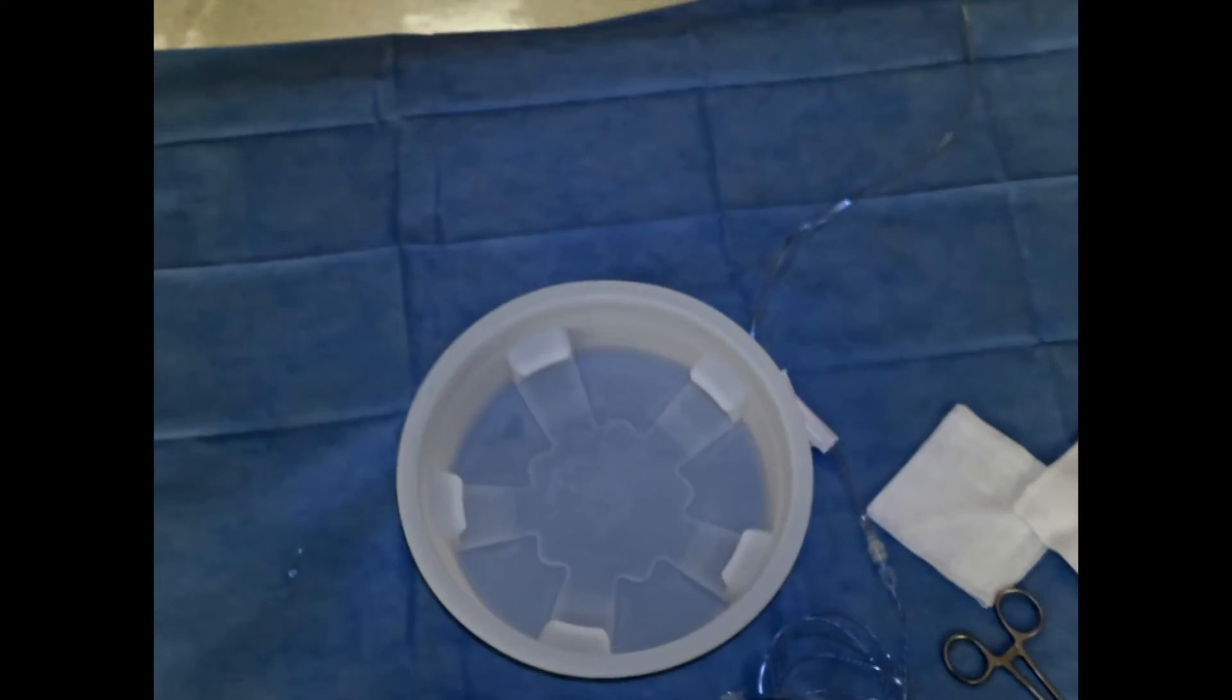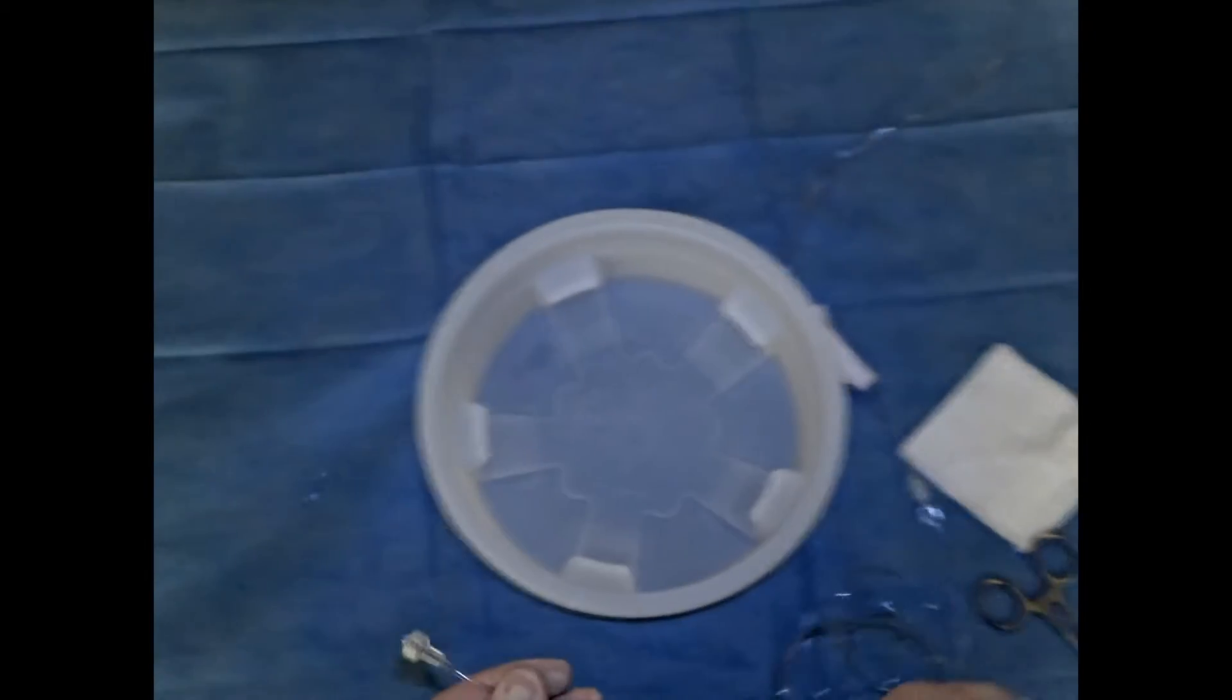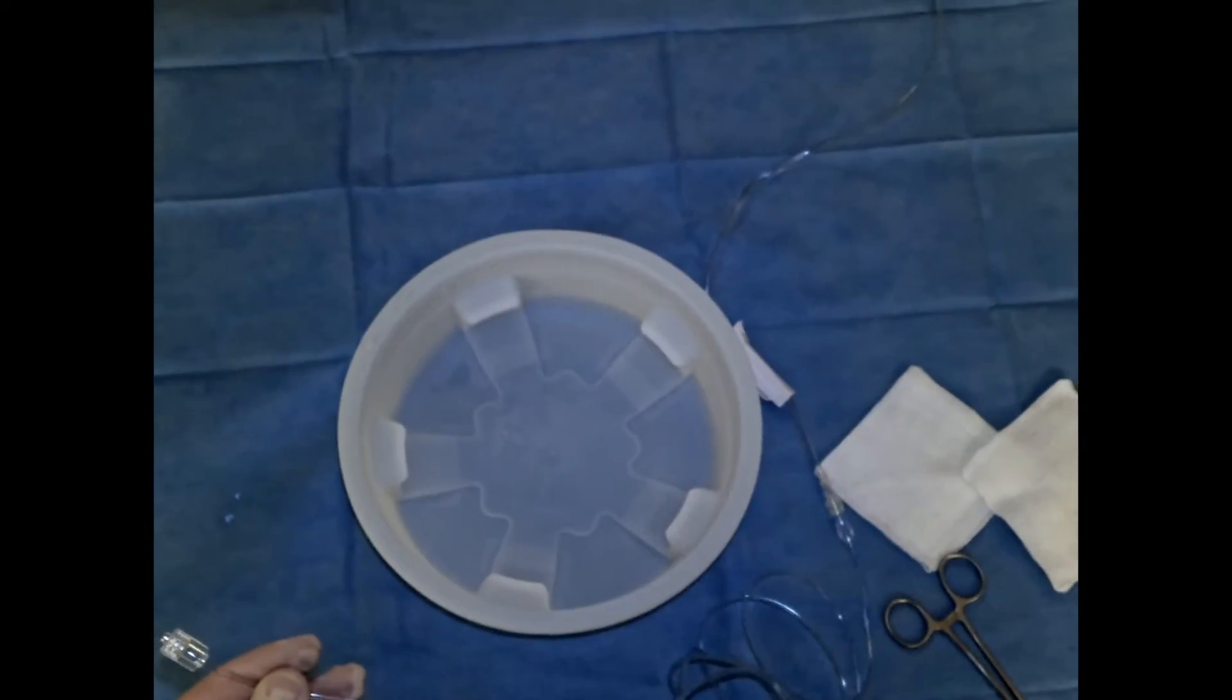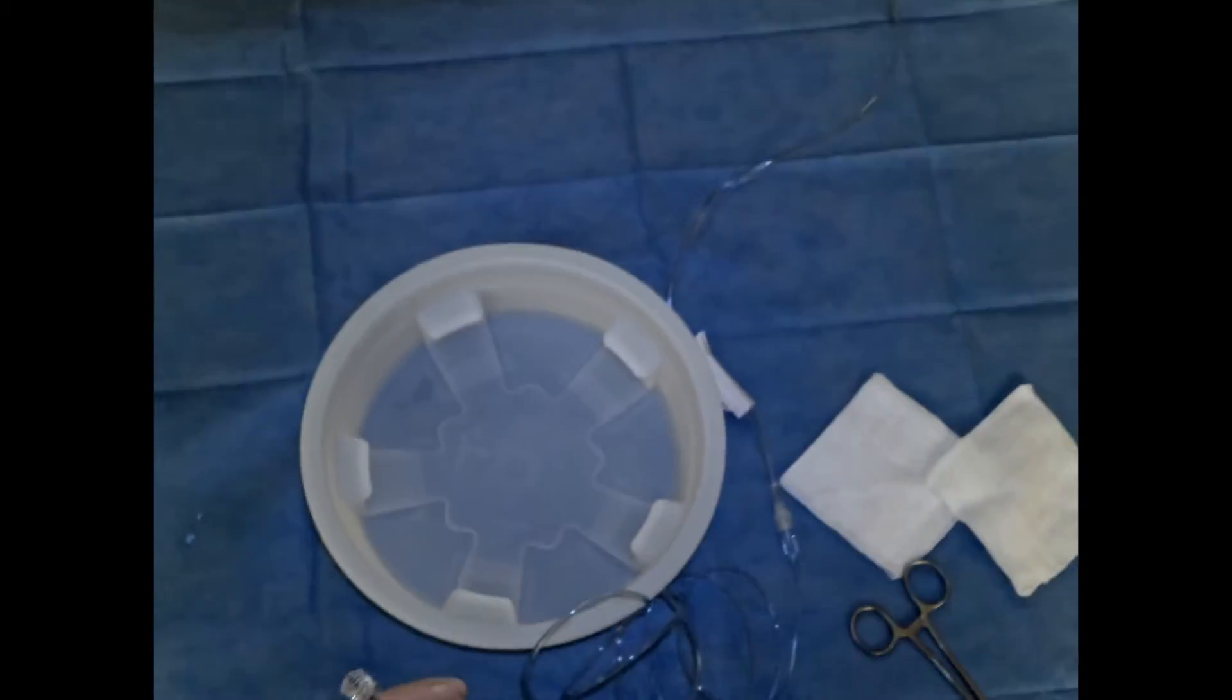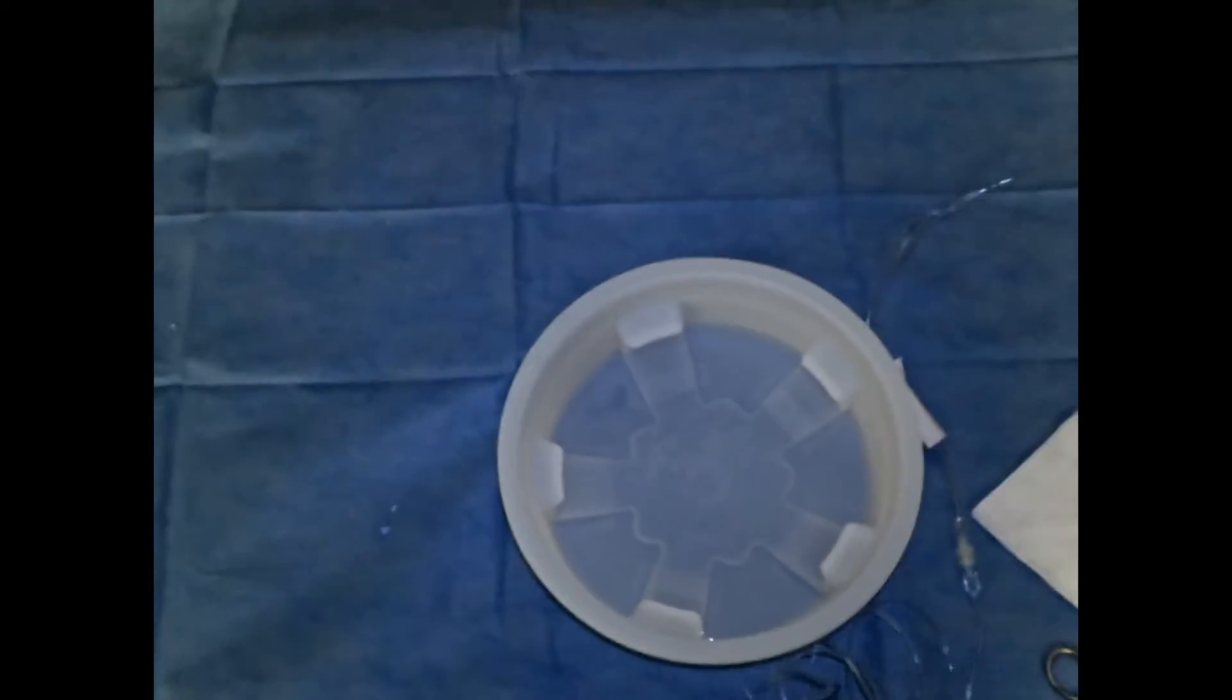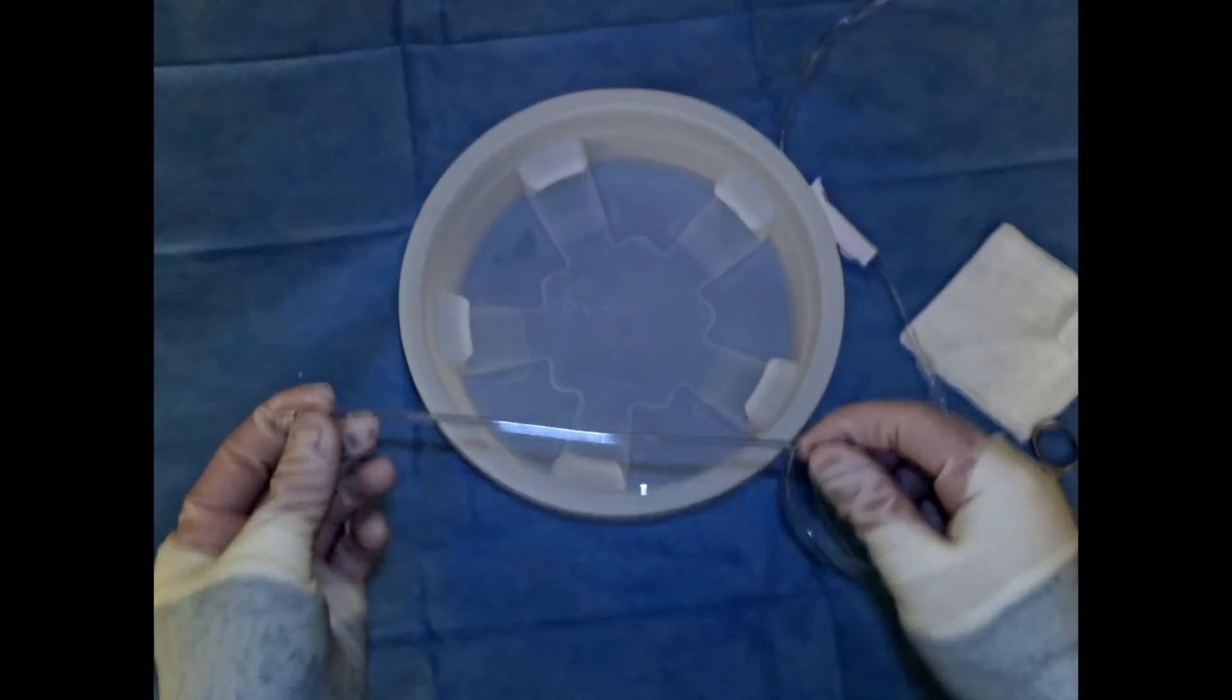In this video we're going to go over how to flush a drip line to prepare it for a neuro-IR procedure. The principle here is very simple: we're going to work very hard to take all air or air bubbles out of this system so that we don't introduce them during our case.